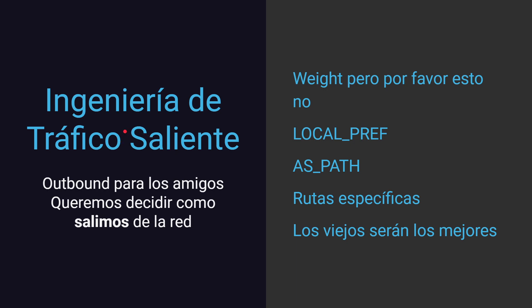Primero, veamos la ingeniería de tráfico saliente, o tráfico outbound. Esto nos va a influenciar cómo nuestro tráfico sale de nuestra red. Principalmente vamos a usar Weight — pero por favor no, ya vamos a ver por qué — local preference, AS-PATH, rutas más específicas. Y como siempre, los más viejos serán los mejores.